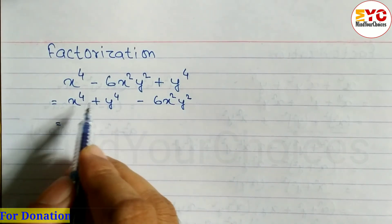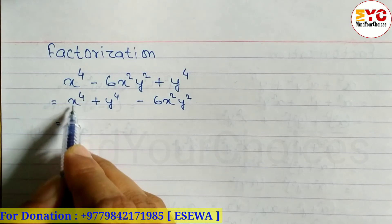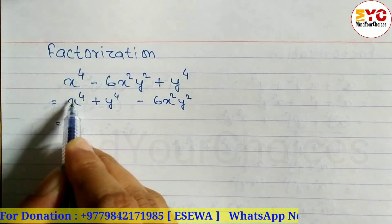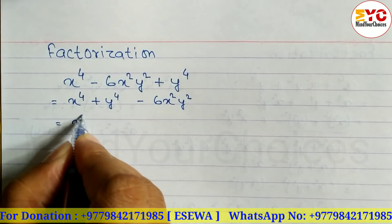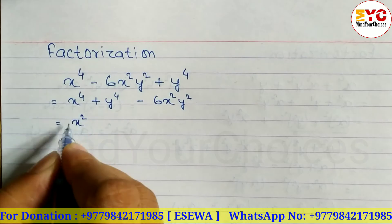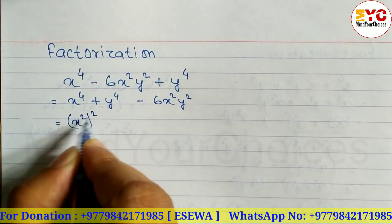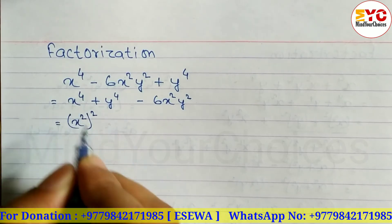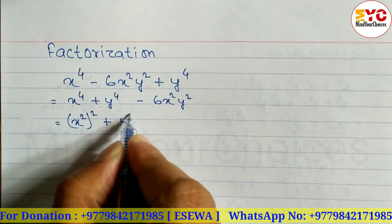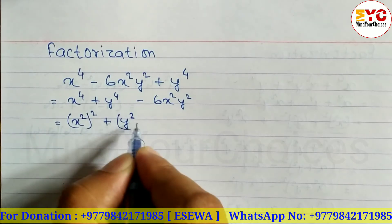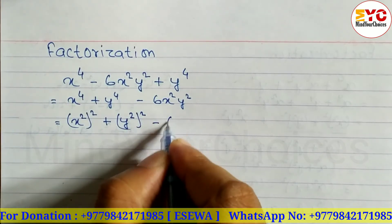First of all we have to arrange in this way, and after that we have to convert this in the form of a squared plus b squared. So we can write x squared whole square — since the power is 4, we write x squared whole square — plus y squared whole square minus 6x squared y squared.